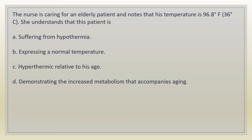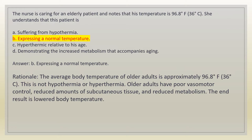The nurse is caring for an elderly patient and notes that his temperature is 96.8 degrees Fahrenheit (36 degrees Celsius). She understands that this patient is: a. suffering from hypothermia, b. expressing a normal temperature, c. hyperthermic relative to his age, d. demonstrating the increased metabolism that accompanies aging. Answer: b. expressing a normal temperature. Rationale: the average body temperature of older adults is approximately 96.8°F (36°C). This is not hypothermia or hyperthermia. Older adults have poor vasomotor control, reduced subcutaneous tissue, and reduced metabolism, resulting in lower body temperature.